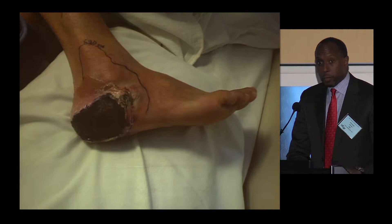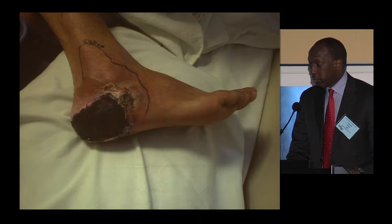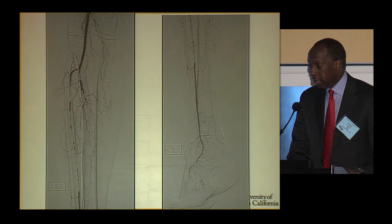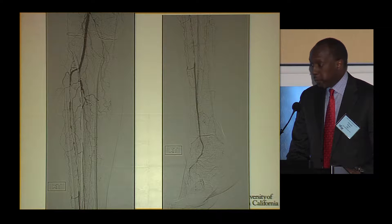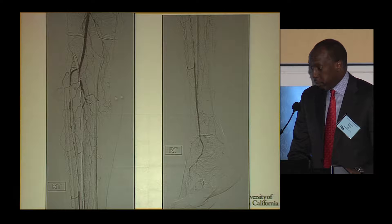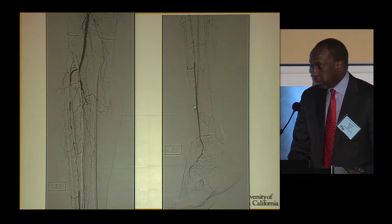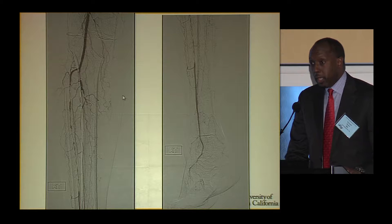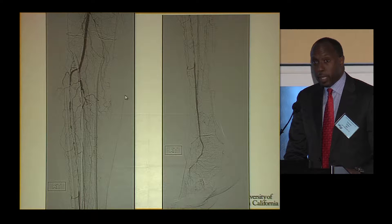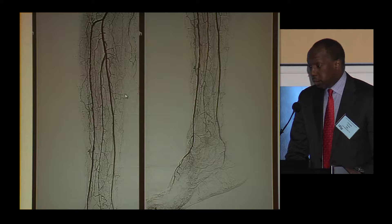We went back and forth and said, okay, let's go ahead and enroll the patient in the trial. This was her lower extremity angiogram — all the disease in the infrapopliteal segment. It's pretty remarkable, the amount of tibial disease and reconstitution here of the anterior tibial. We said, let's see where she randomizes. She randomized to endo, and this was the result.